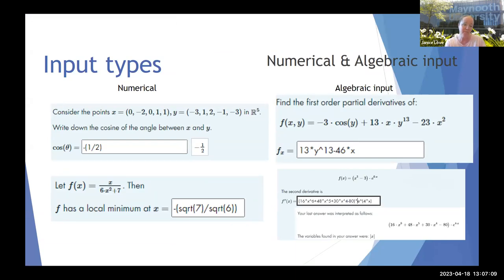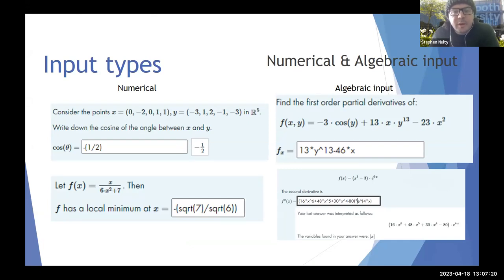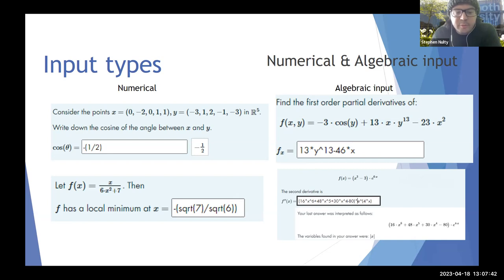I'm going to go through some examples of the different features of STAC in the context of questions we've been using over the last couple of years. The first thing I'd like to present is a simple numerical input type — this supports decimal answers, fraction answers, and other types of numerical answers like expressions involving square roots or mathematical constants. Then for expressions involving variables, there's an algebraic input, which could be things like polynomials or trigonometric, logarithmic, or exponential functions — and these will be graded with the algebraic input type.